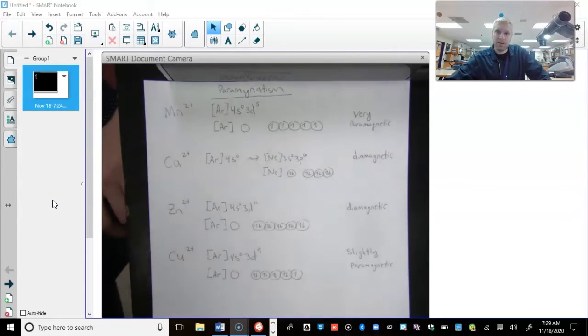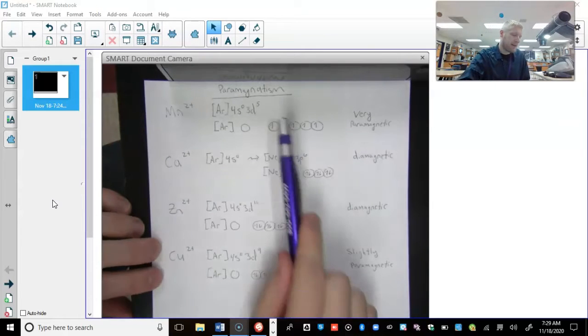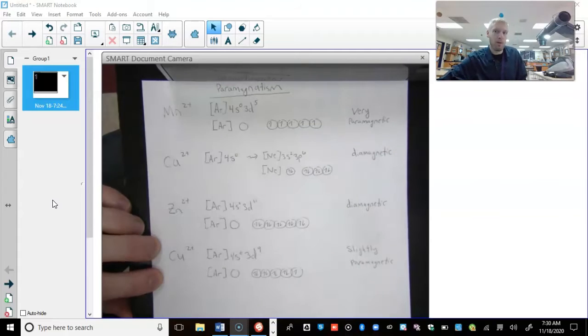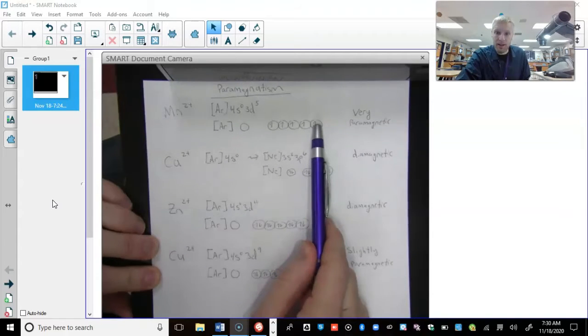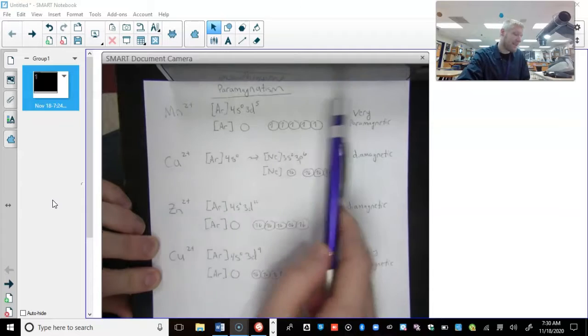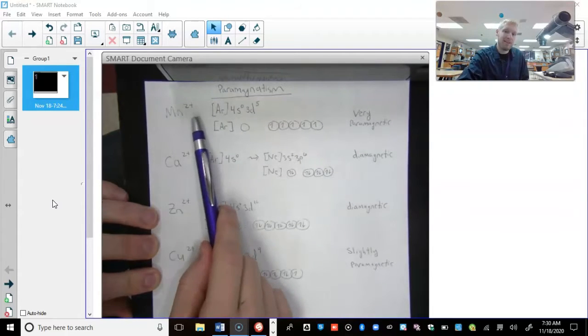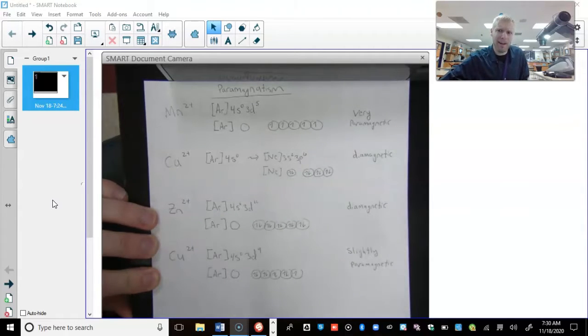Remember, paramagnetism is a slight attraction to a magnetic field based off of the d orbitals and whether they are partially filled or not. So if it is diamagnetic, that means all of the d orbitals would be filled with two electrons. Paramagnetism means that there are going to be a few that are not paired. So we're looking at manganese 2+. Looks like it's going to be one of the most paramagnetic of pretty much any of them, other than iron being paramagnetic.